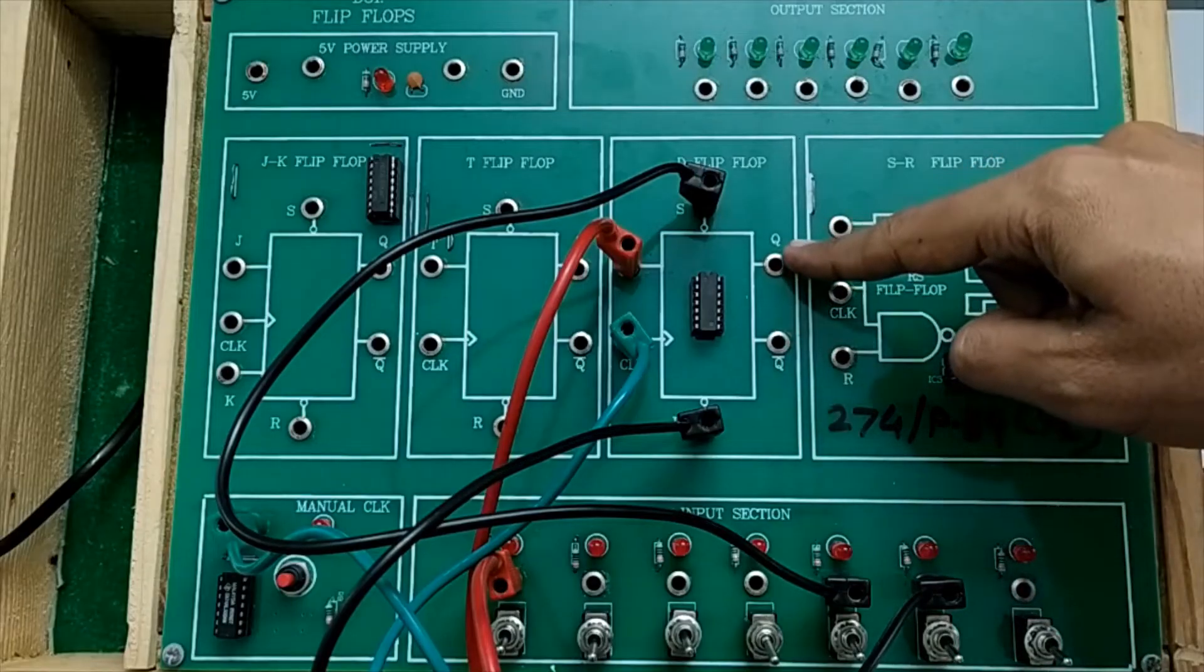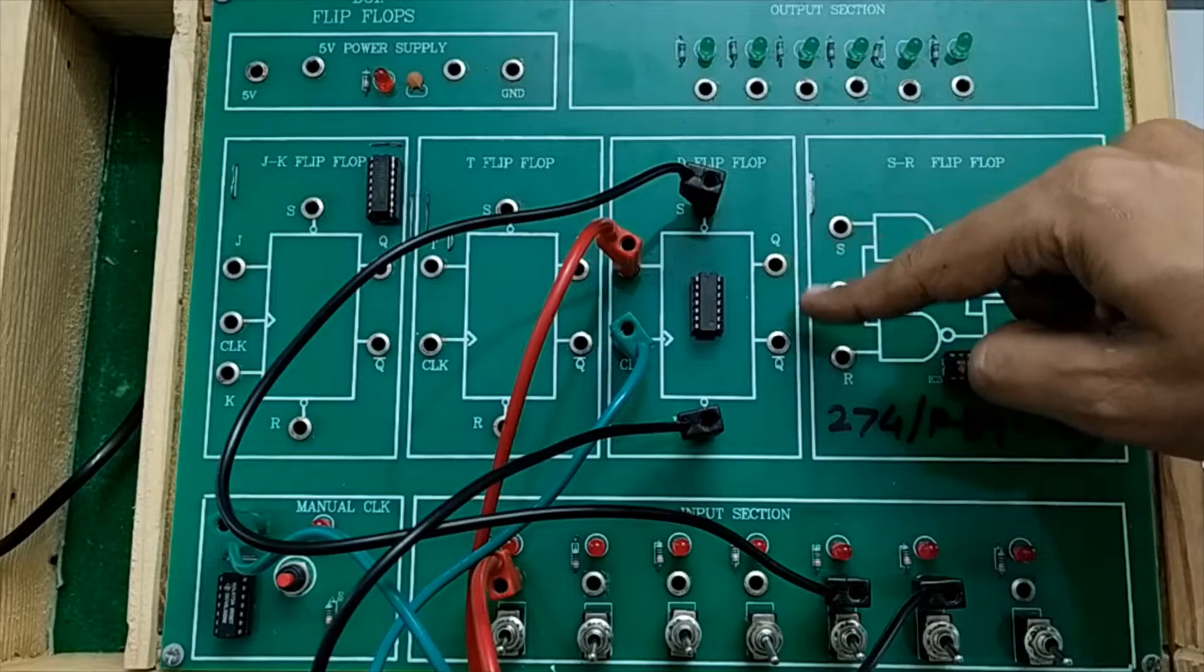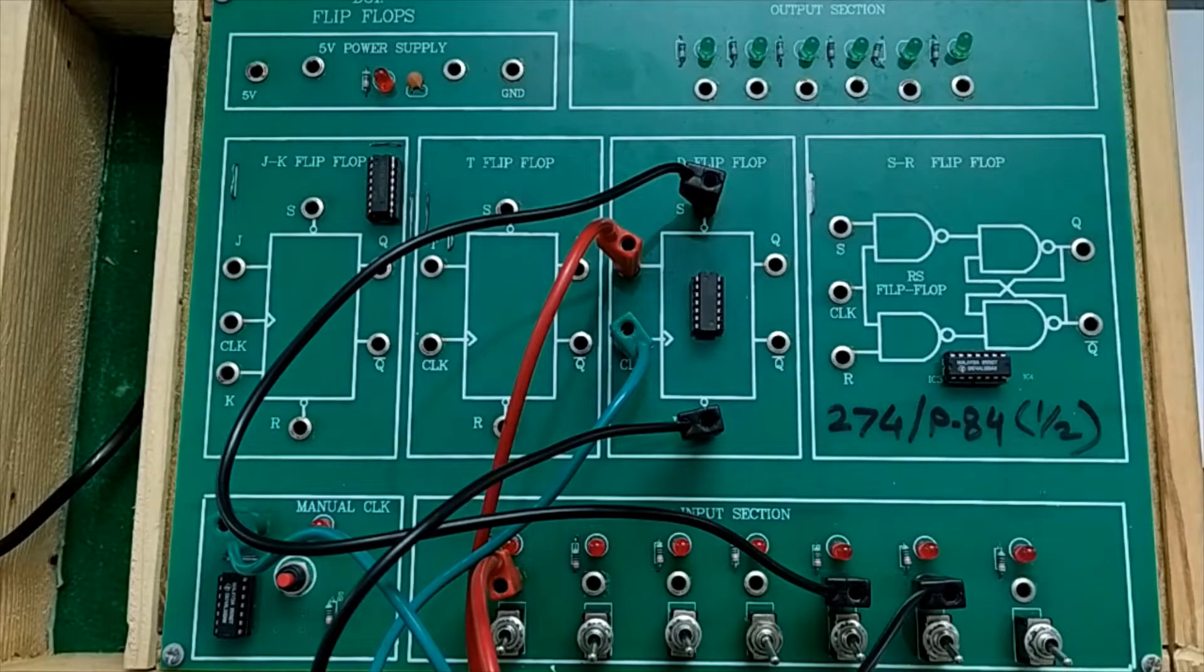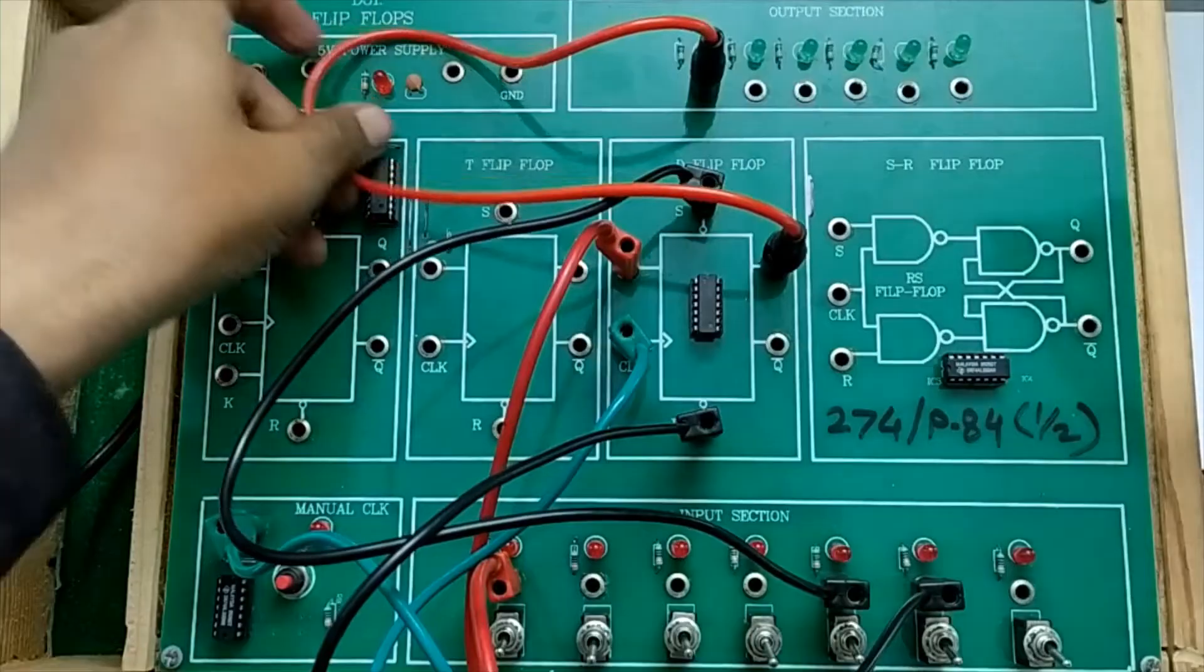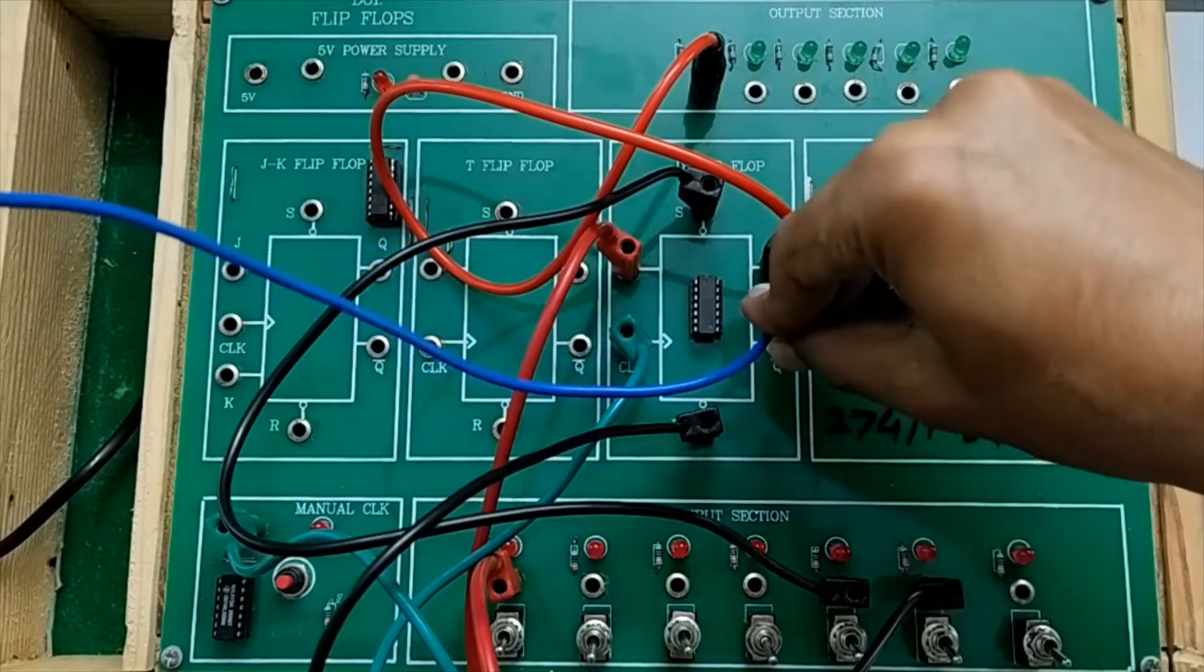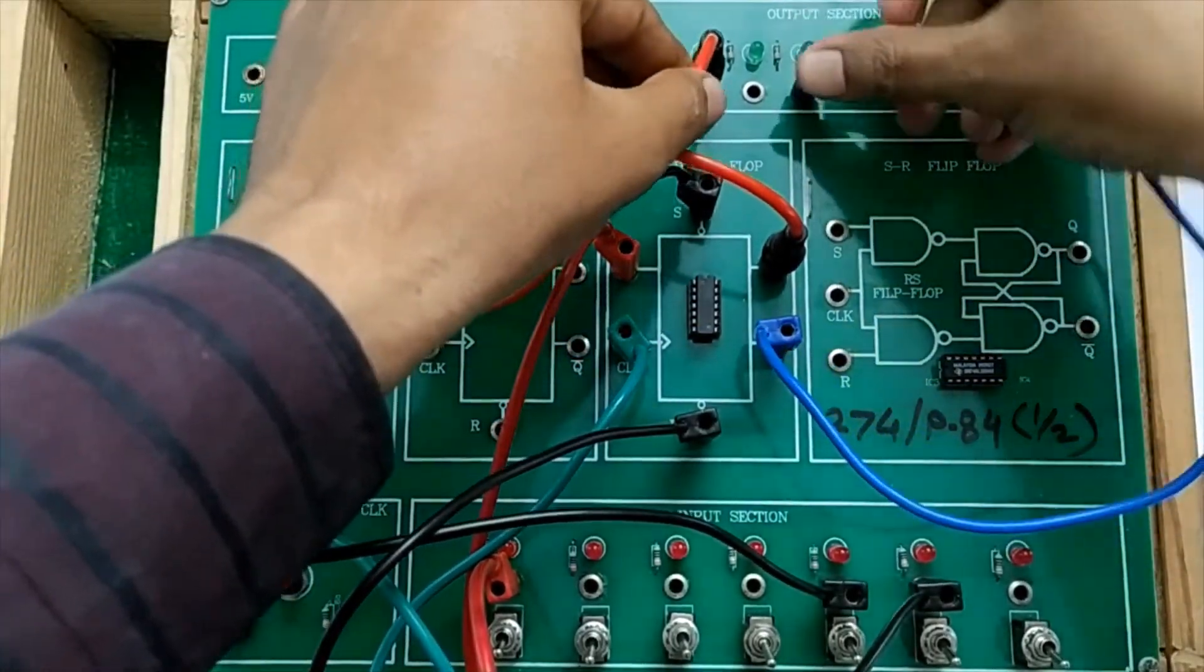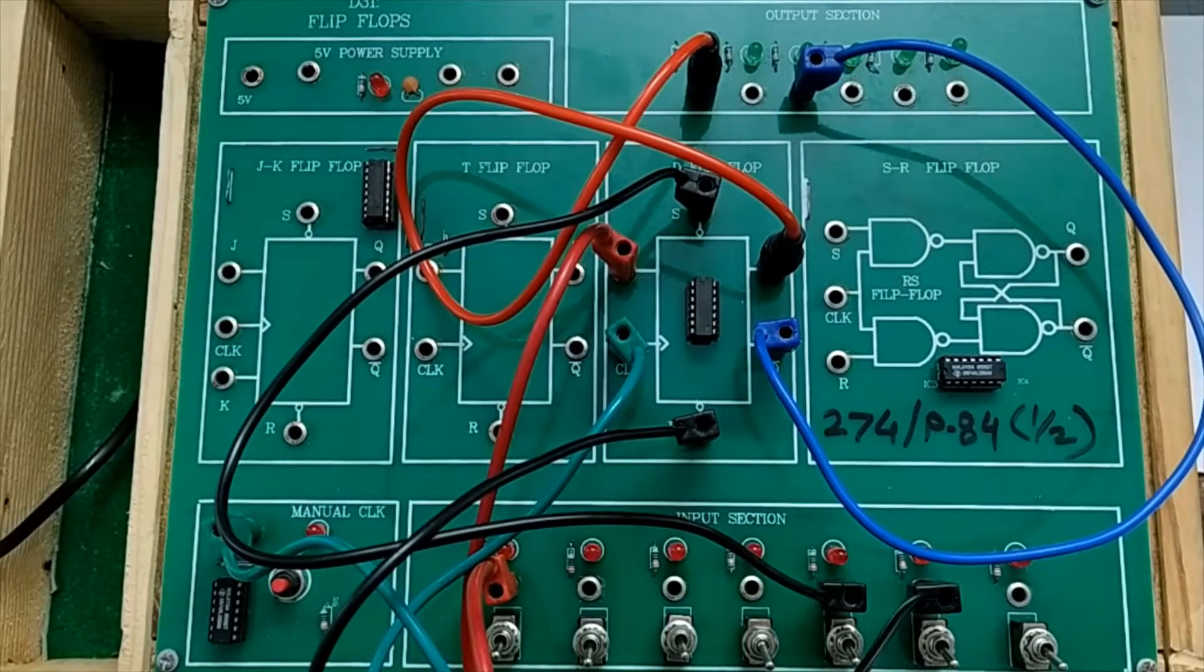Complementary outputs are available here. Q is in true form, Q bar is in complemented form. Output Q is connected to one of the LEDs of output section. Similarly, complemented output Q bar is connected to another LED of output section. We are done with the connections.